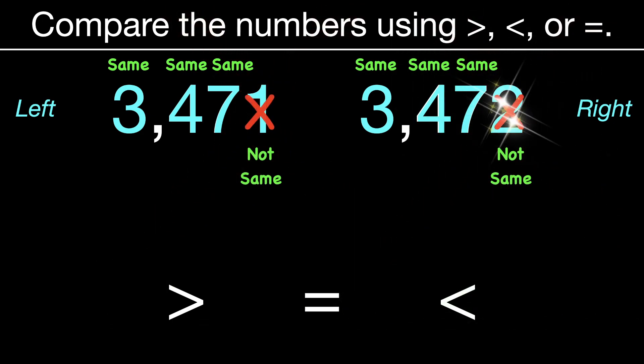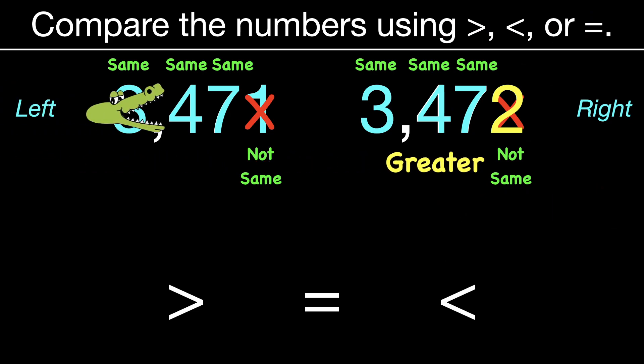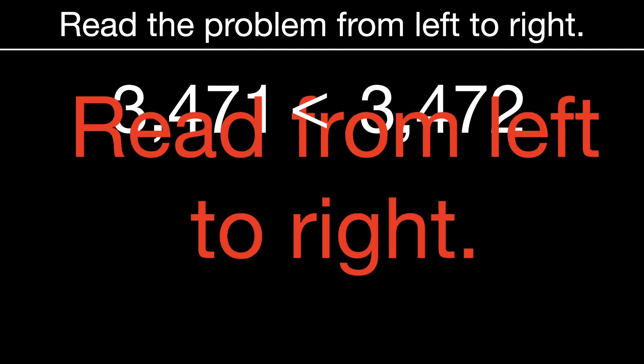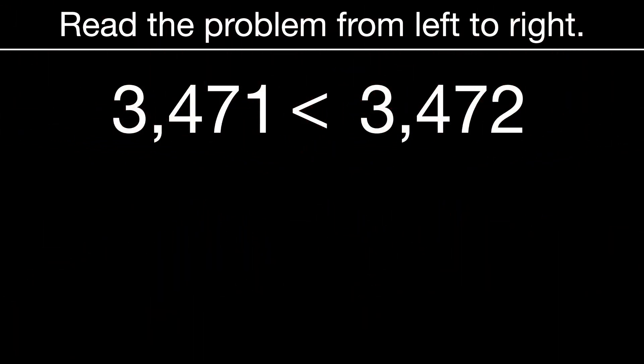So therefore, that entire number is greater. So we get the hungry alligator involved. And again, if we wanted to read that, we're going to read that from the left side to the right side. And this would read as 3,471 is less than 3,472.